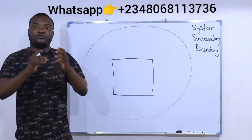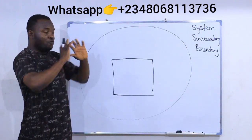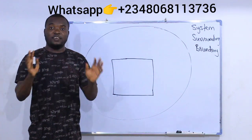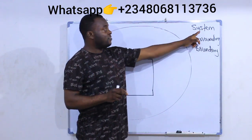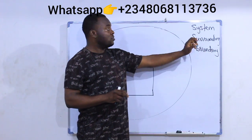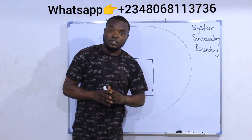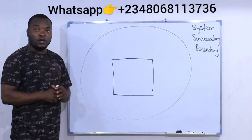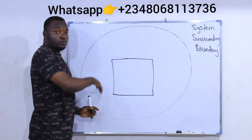When a chemist visualizes the universe, all he sees are just three things. The first is the surrounding, the second is the system, and the third is the boundary. This is the universe — that is the world we live in.